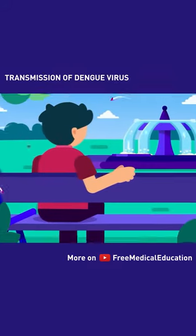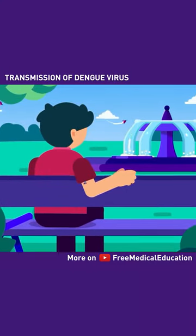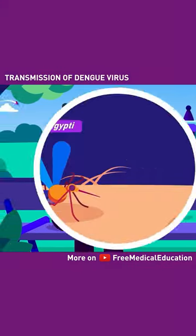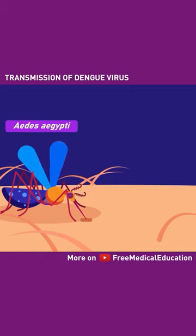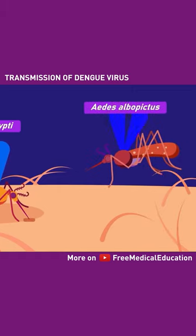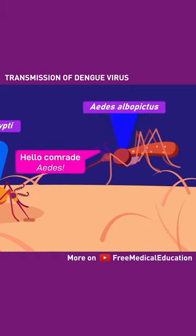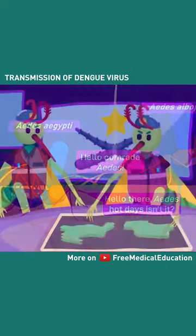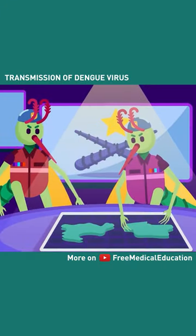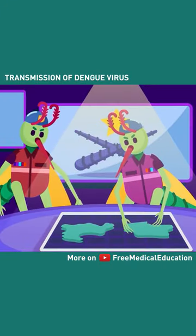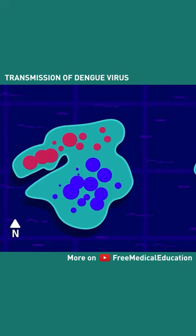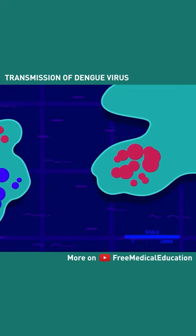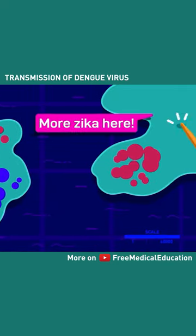Dengue. The virus is spread via the bite of a mosquito, mostly by Aedes aegypti, and to a lesser extent by Aedes albopictus mosquito. Important to note is that these very same mosquitoes are involved in the spread of other viral diseases, including chikungunya and Zika.